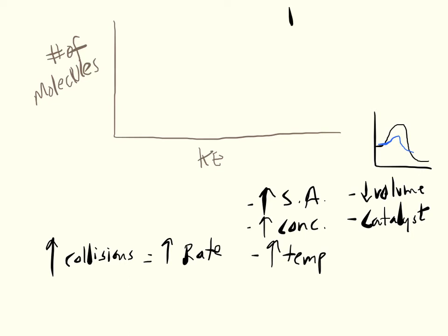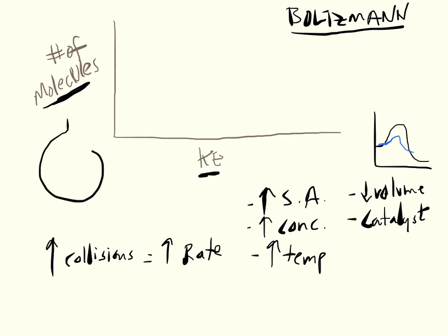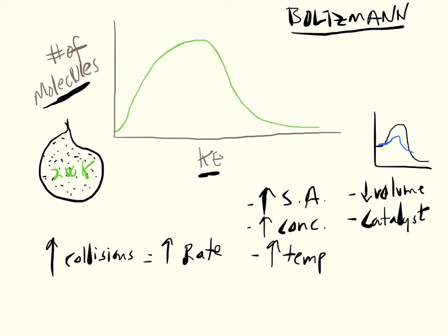We can graph the effect of temperature using the Boltzmann distribution, which shows how many molecules have a particular amount of kinetic energy. In a sample of gas, molecules aren't all moving at the same speed — some are very fast, some are slower — but the majority move at a particular speed. For example, at 200 Kelvin we'd see a distribution curve where the highest point indicates the most common kinetic energy.